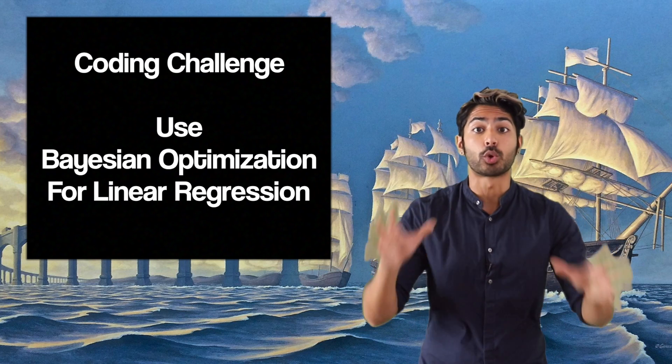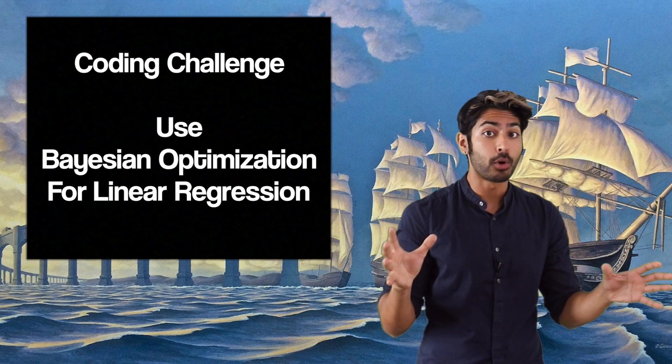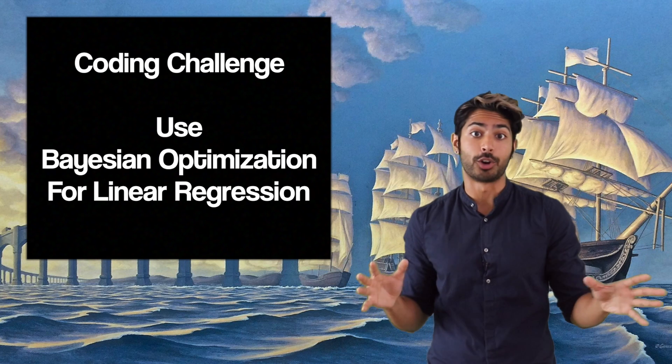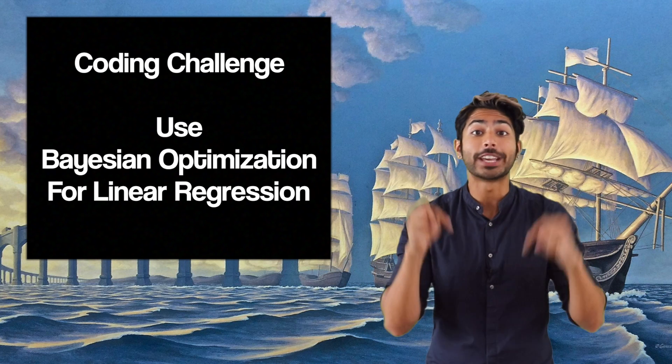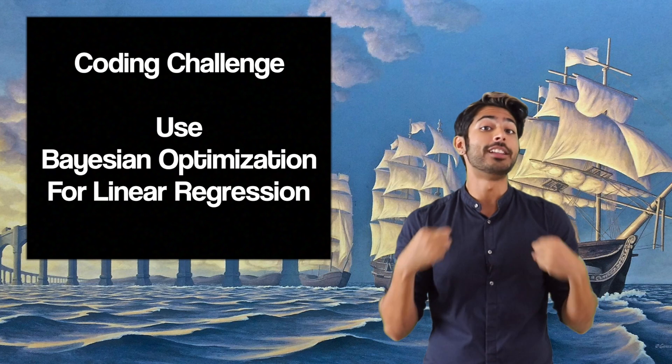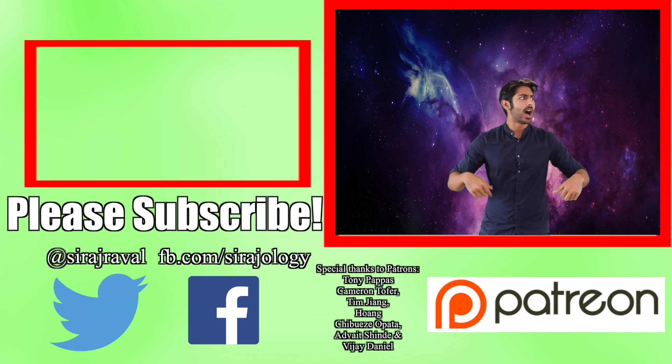This week's coding challenge is to write out a Bayesian optimization strategy for the hyperparameters of a linear regression model. See the GitHub link in the description for instructions, and post your GitHub link in the comments section. I'll announce the winner next week. Please subscribe for more programming videos, and for now, I've got to update my priors. So, thanks for watching.